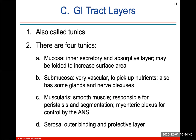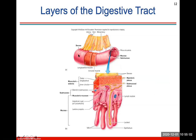There are four tunics or layers to the GI tract: the mucosa, the submucosa, the muscularis, and the serosa. Each has a purpose, whether that's to increase surface area, pick up nutrients, house arteries and veins, or serve as the smooth muscle part. The smooth muscle layers help with peristalsis and mixing.